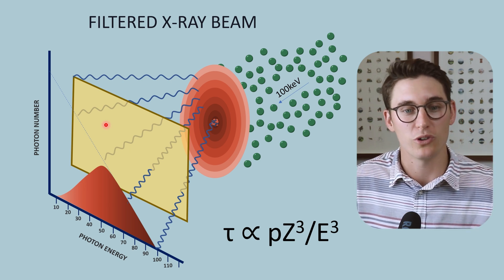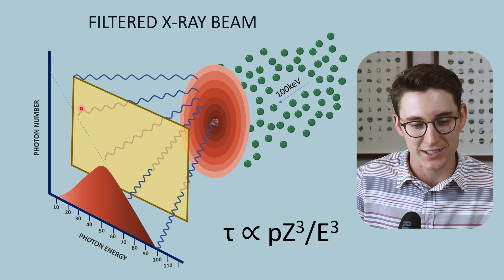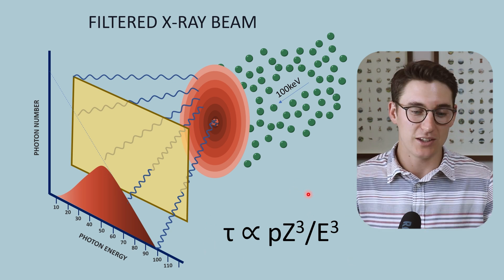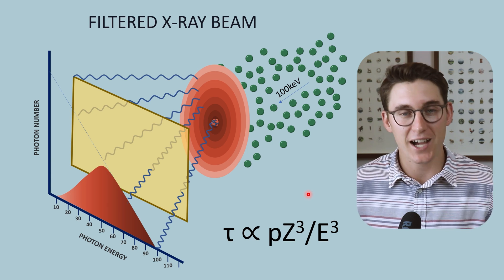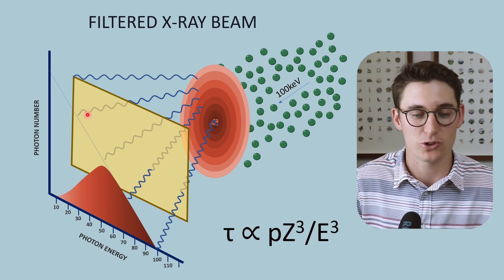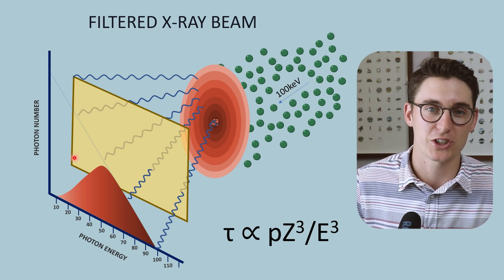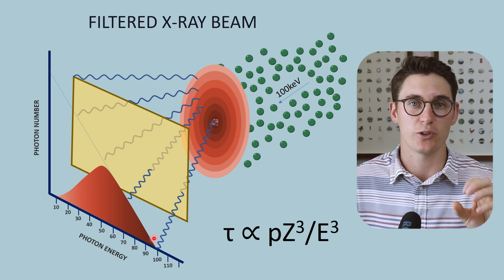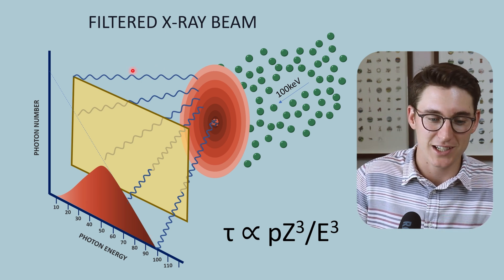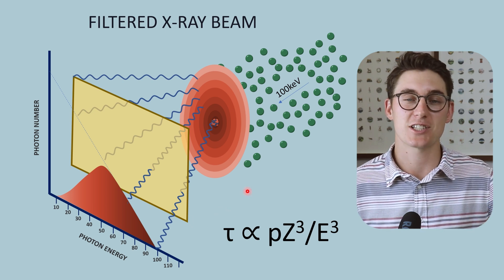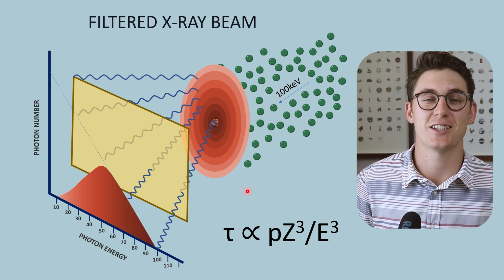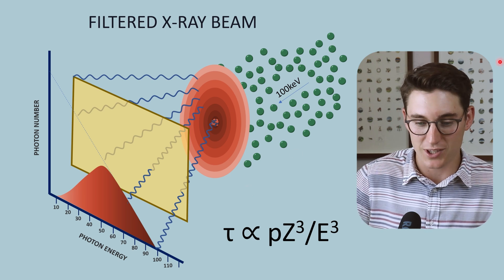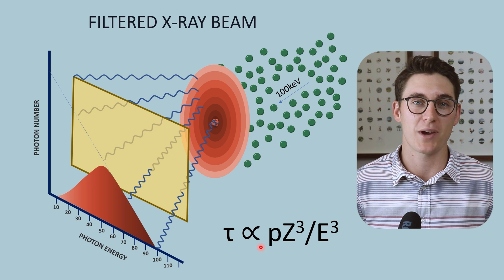Filtration is the process of removal of x-rays from an x-ray beam, preferentially removing lower energy x-rays because of the photoelectric effect. The photoelectric effect attenuates x-rays by absorbing the entire x-ray energy and releasing a photoelectron — that x-ray is completely absorbed and won't reach our patient. Because lower energy x-rays are preferentially absorbed, the higher energy x-rays continue towards our patient. This is the filtered Bremsstrahlung x-ray spectrum, a conceptual framework we will build on throughout the course.